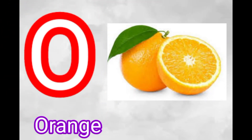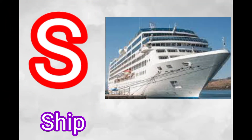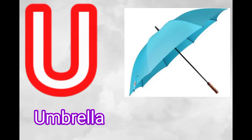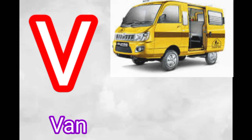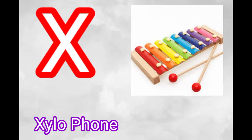O for orange, P for peacock, Q for queen, R for rose, S for sheep, T for tiger, U for umbrella, V for van, W for watch, X for xylophone.